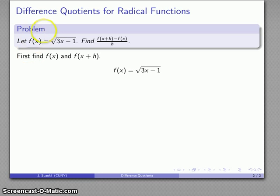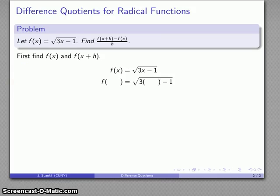So, f of x, well, there it is, square root 3x minus 1. We'll go ahead and write that down. For f of x plus h, we can start off by just dropping out our x variables and leaving an empty set of parentheses in their place. f of blank is square root of 3 blank minus 1, and whatever I put in the first one, I want to put in all of them.